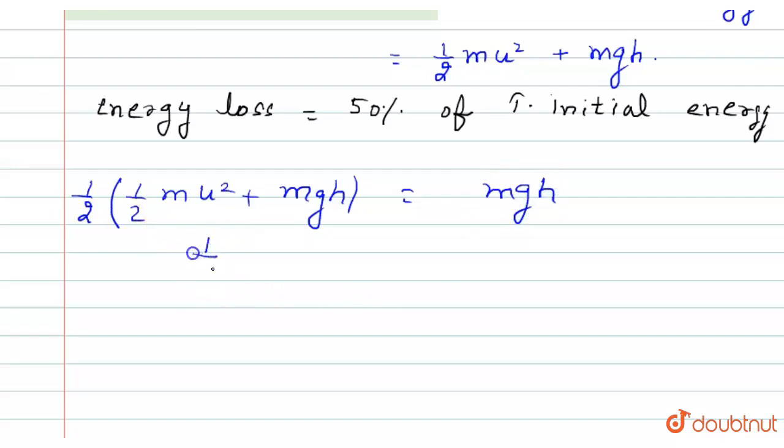By solving this, 1/4 m u² equals 1/2 mgh. From here we can find the value of u: u equals square root of 2gh.